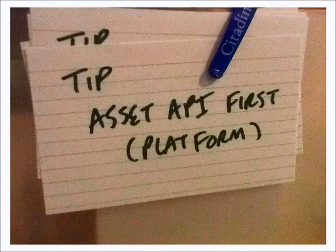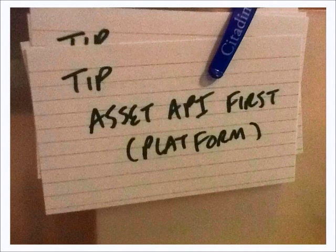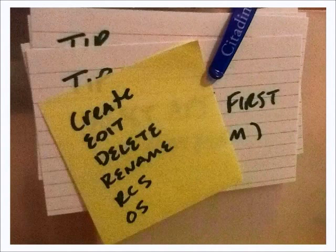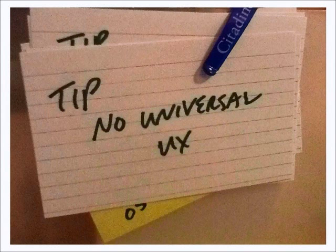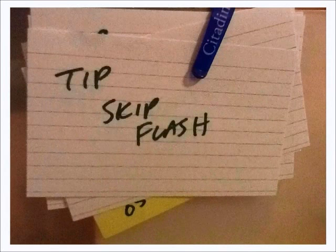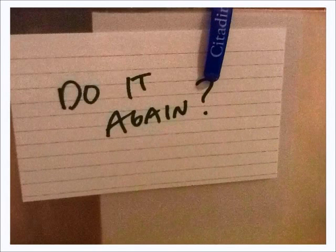We've had to change our asset API multiple times during our process, and backing out of a previous change has taken quite a lot of work. The typical things to work out: create, edit, delete, rename, revision control, how the OS manages it. There's no universal user experience — you're never going to build something that works perfectly for everyone. So focus on the culture and people you have and how that works. I would recommend you just skip Flash if you're thinking about it. Just go straight to HTML5 — it's still rough around the edges, but it's plenty workable.